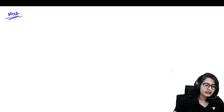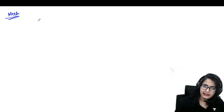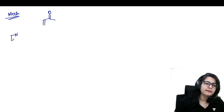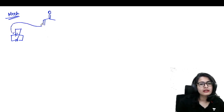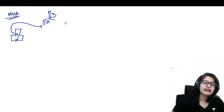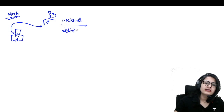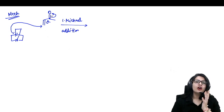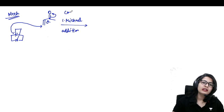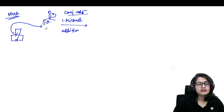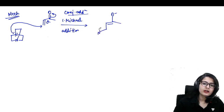Moving on to the reaction mechanism: first, you take your electron-poor alkene — the alpha-beta unsaturated carbonyl molecule. The reaction takes place because of DABCO. From its nitrogen, DABCO performs a Michael addition — the first step. If you have another electron-withdrawing group like nitro or cyanide, you can also call it conjugate addition. This conjugate addition to the double bond gives you the enolate-type intermediate.